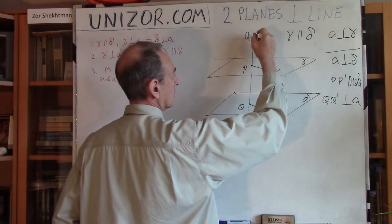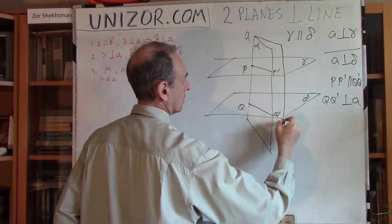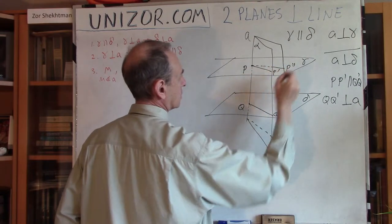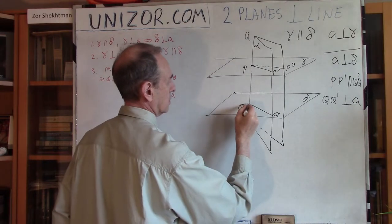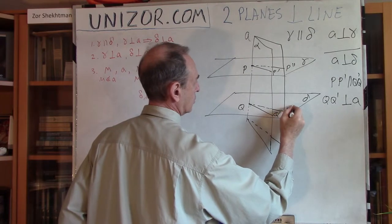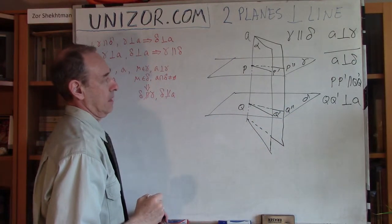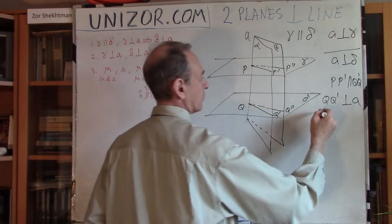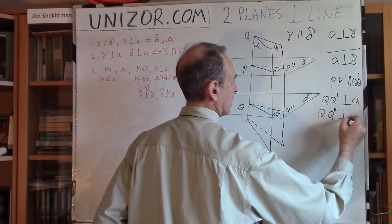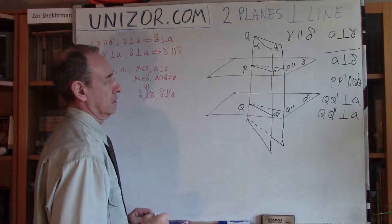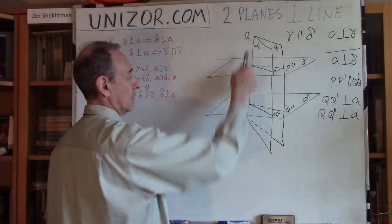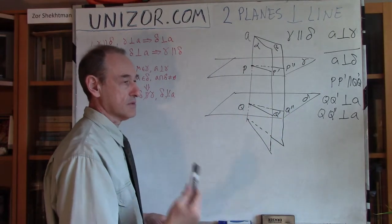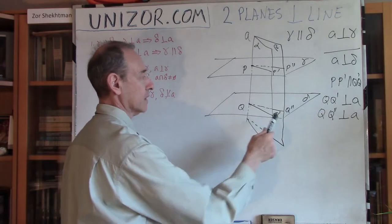We will do exactly the same with another plane — let's call it beta — and we get another pair of intersection lines, with QQ double-prime also perpendicular to A. So consequently, we have line A perpendicular to two lines on plane delta. That is a sufficient condition for the line to be perpendicular to the entire plane, as we have proven before.